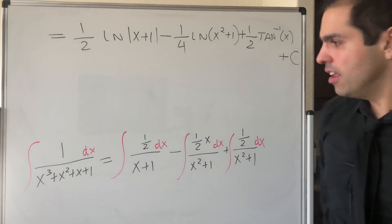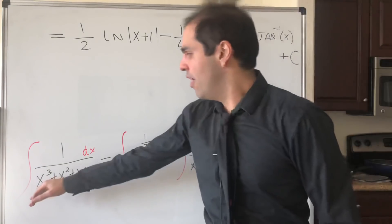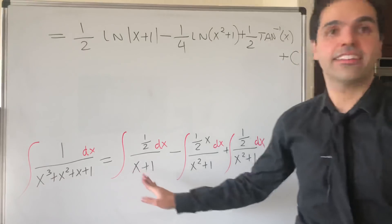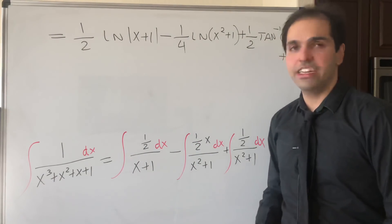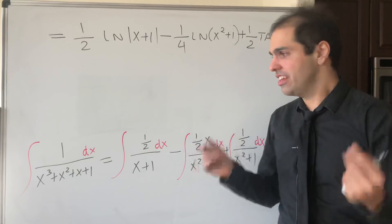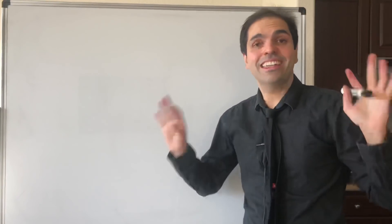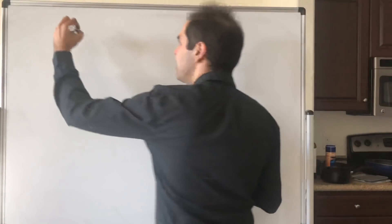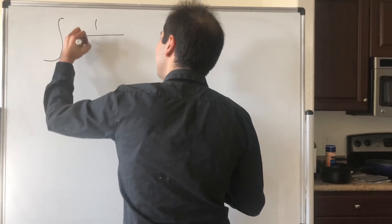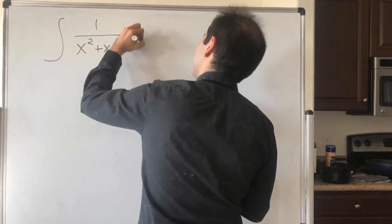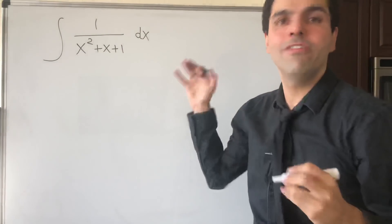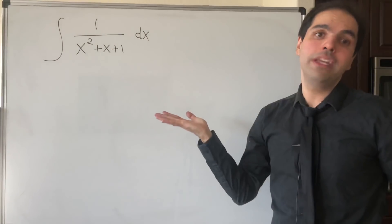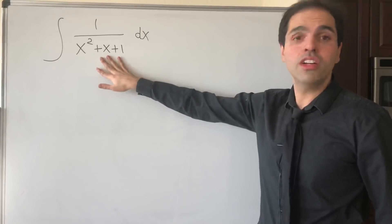So surprisingly this integral involves both ln of x squared plus 1 and arctangent — how neat is that! Now this raises a question: we did x cubed plus x squared plus x plus 1, but what if we just did x squared plus x plus 1? What would happen? Let's do this.